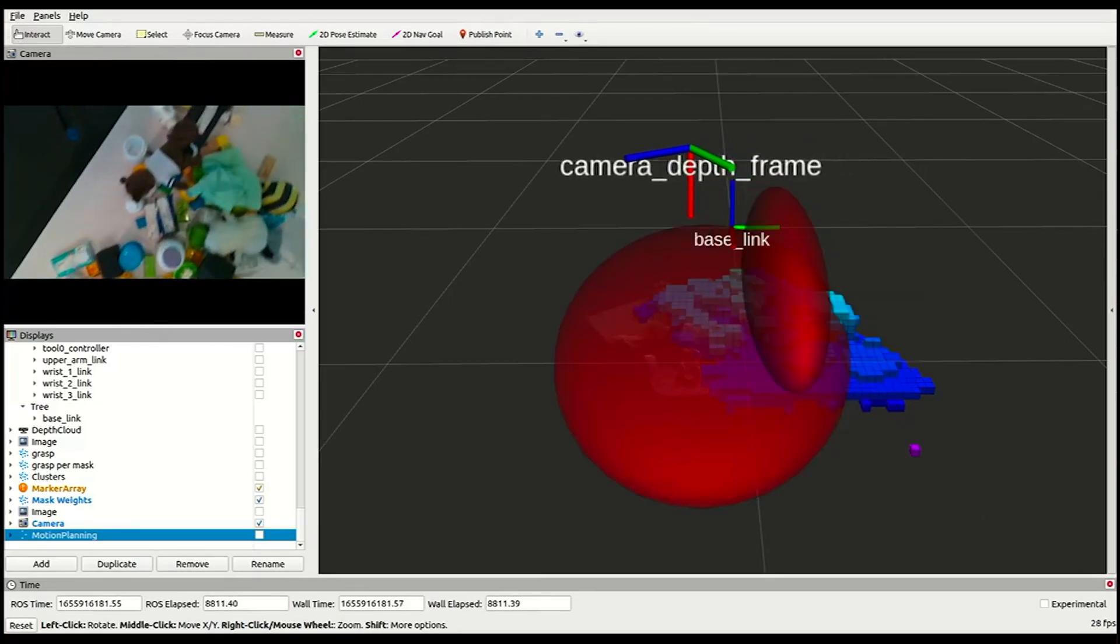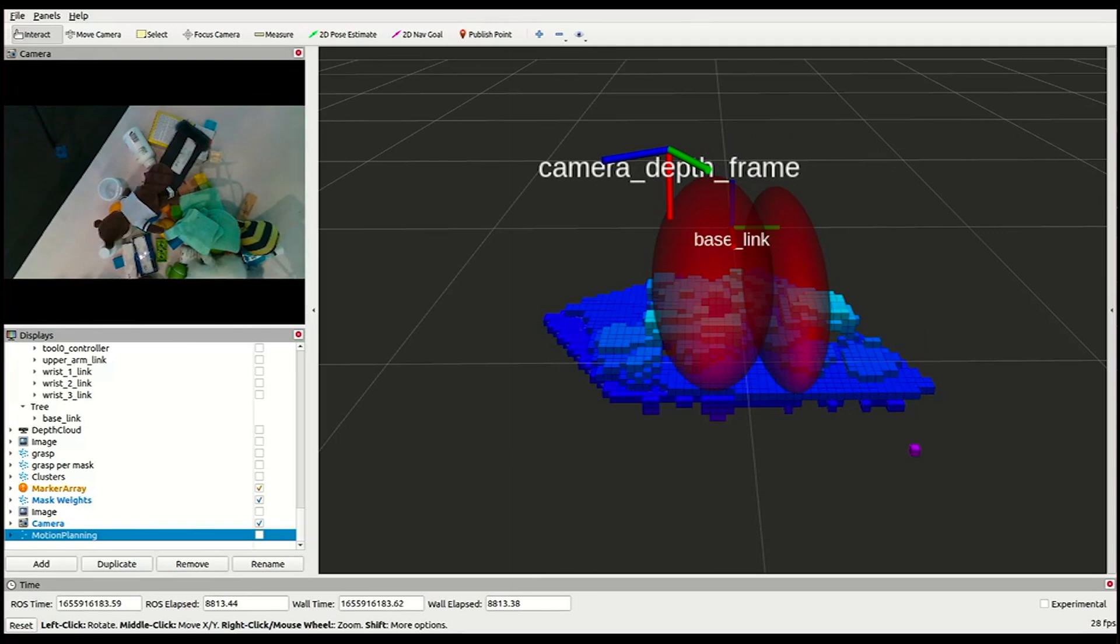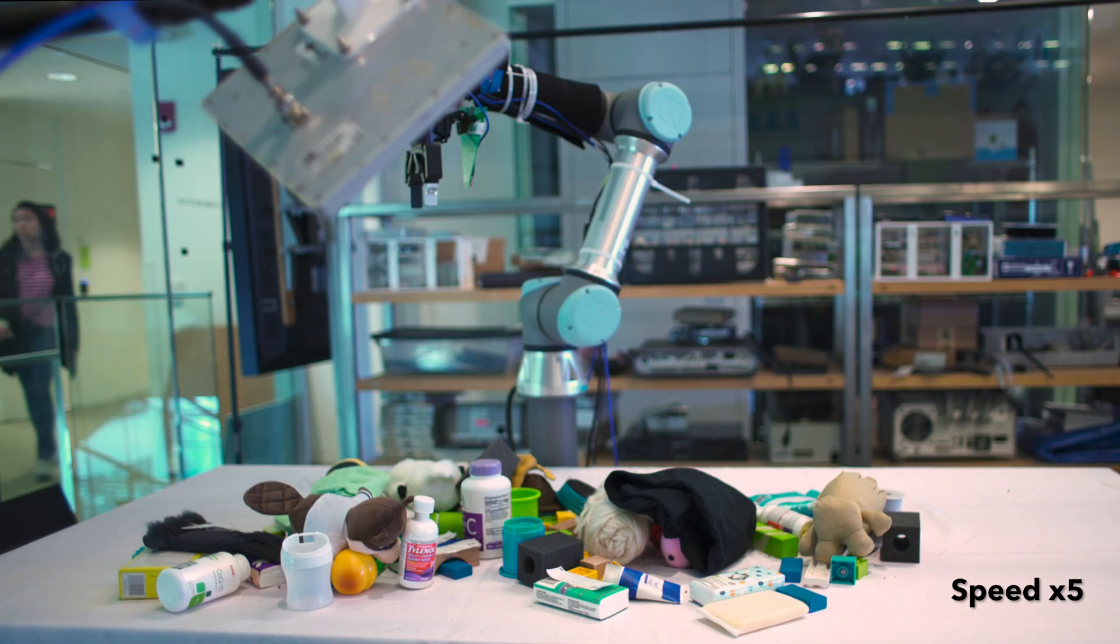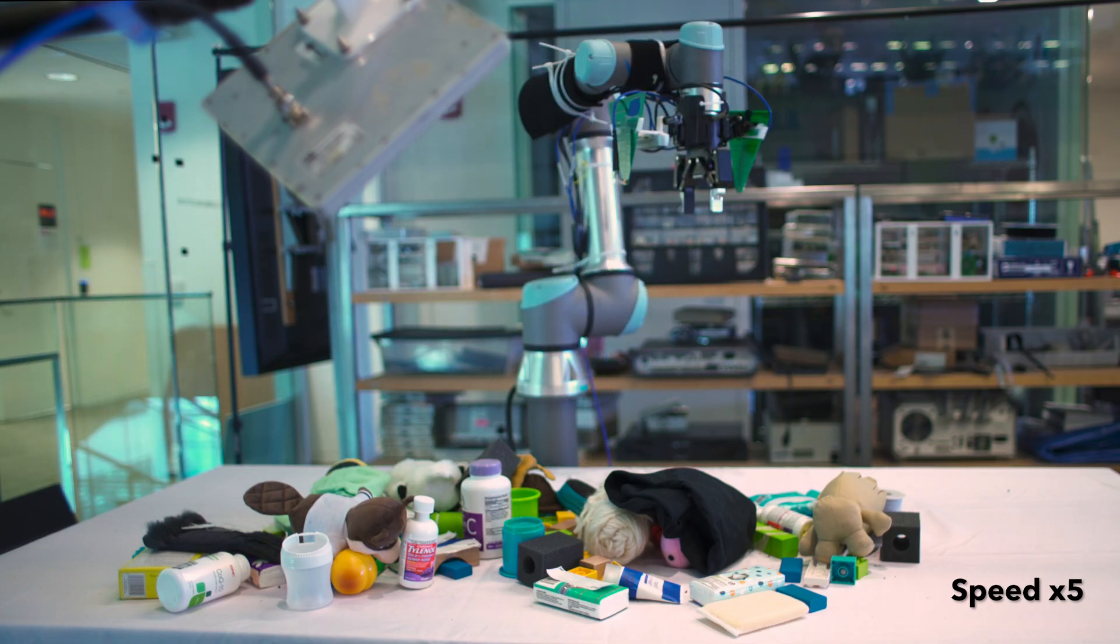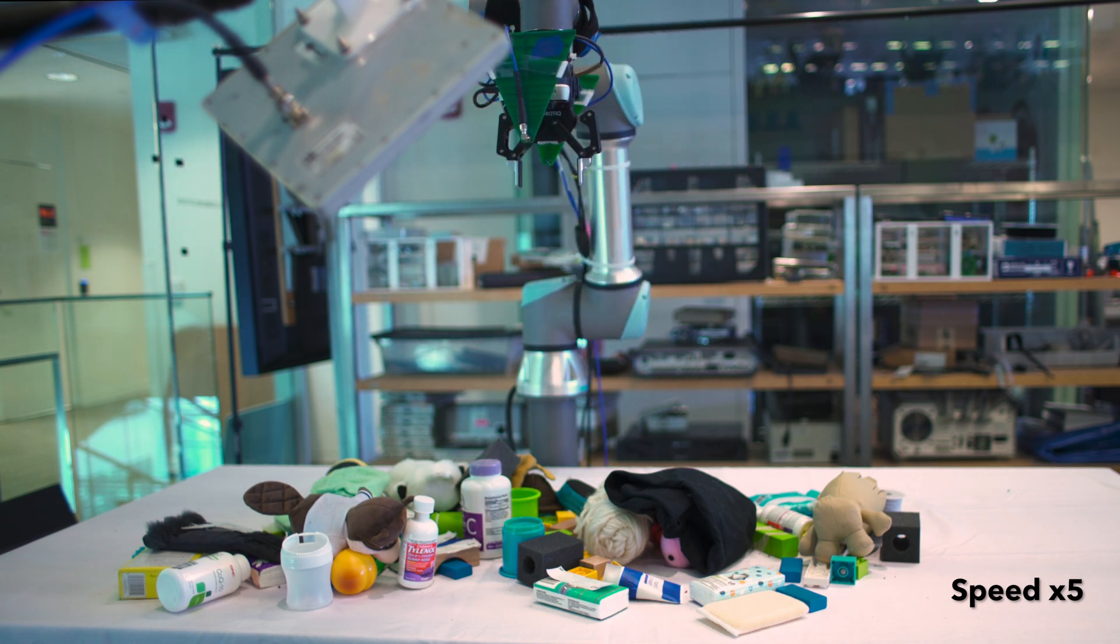As the robotic arm moves, the system scans the pile with its camera to create a 3D model of the environment. Simultaneously, it sends signals from its antenna to locate RFID tags.